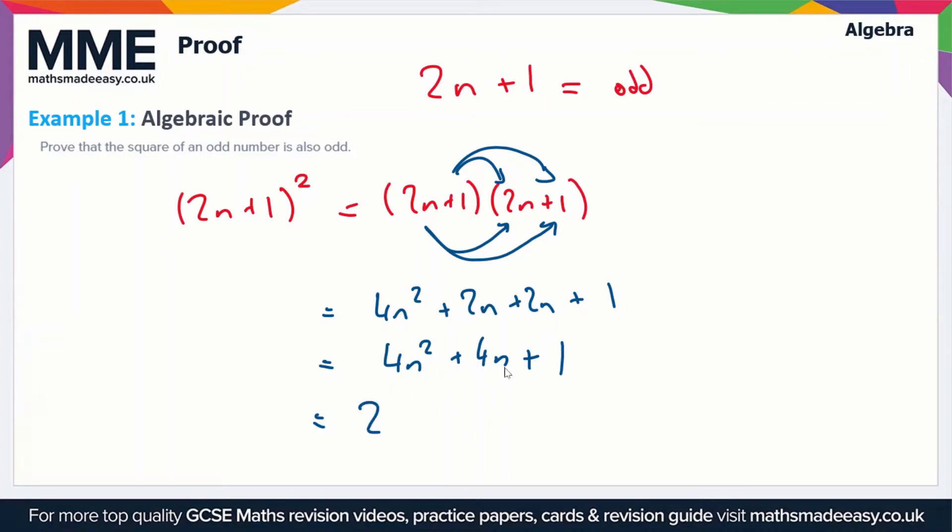Then we can take out a factor of 2 here. We could take out a factor of 4 if we want, but we want to put this in the same form as before. So we've got 2 lots of (2n² + 2n), close the bracket, plus 1.